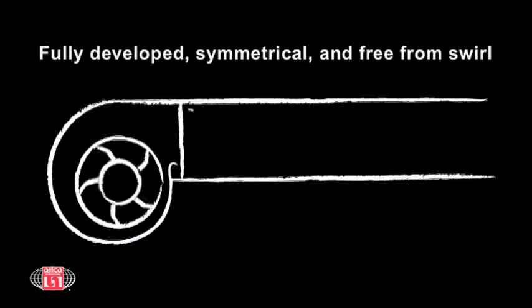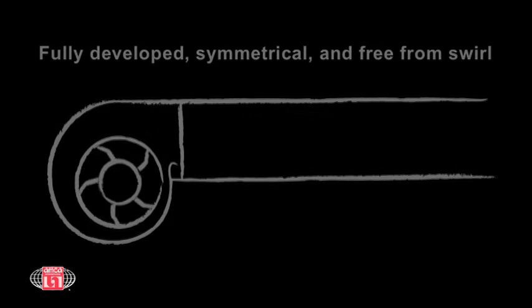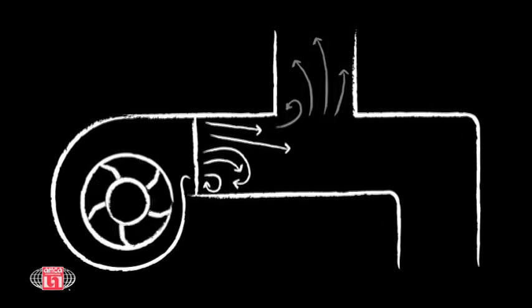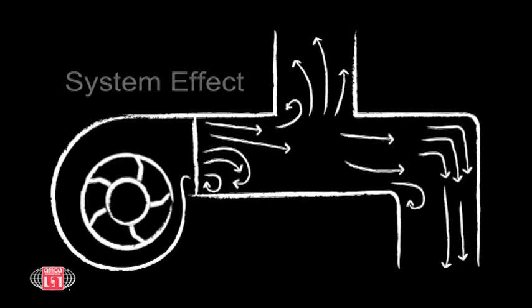For optimum system performance, the air flow at the inlet must be fully developed, symmetrical, and free from swirl. Ducting on the outlet needs to be designed so that the asymmetrical flow profile from the fan is allowed to diffuse and approach fully developed flow. The effect on fan performance when these conditions are not met is called system effect.